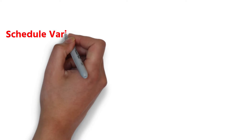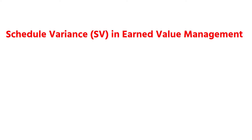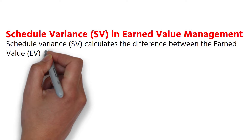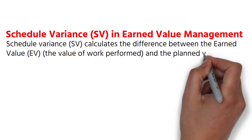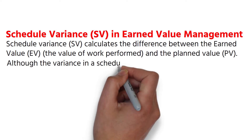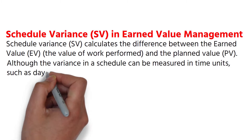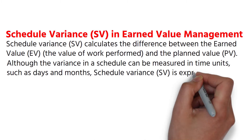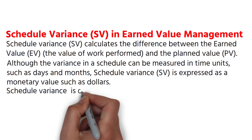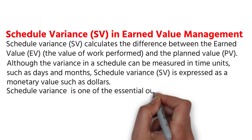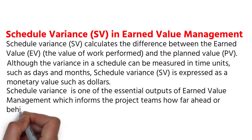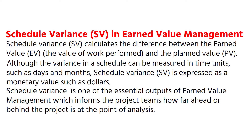Schedule Variance in Earned Value Management. Schedule Variance calculates the difference between the earned value — the value of work performed — and the planned value. Although the variance in a schedule can be measured in time units such as days and months, Schedule Variance is expressed as a monetary value such as dollars. Schedule Variance is one of the essential outputs of Earned Value Management, which informs the project teams how far ahead or behind the project is at the point of analysis.